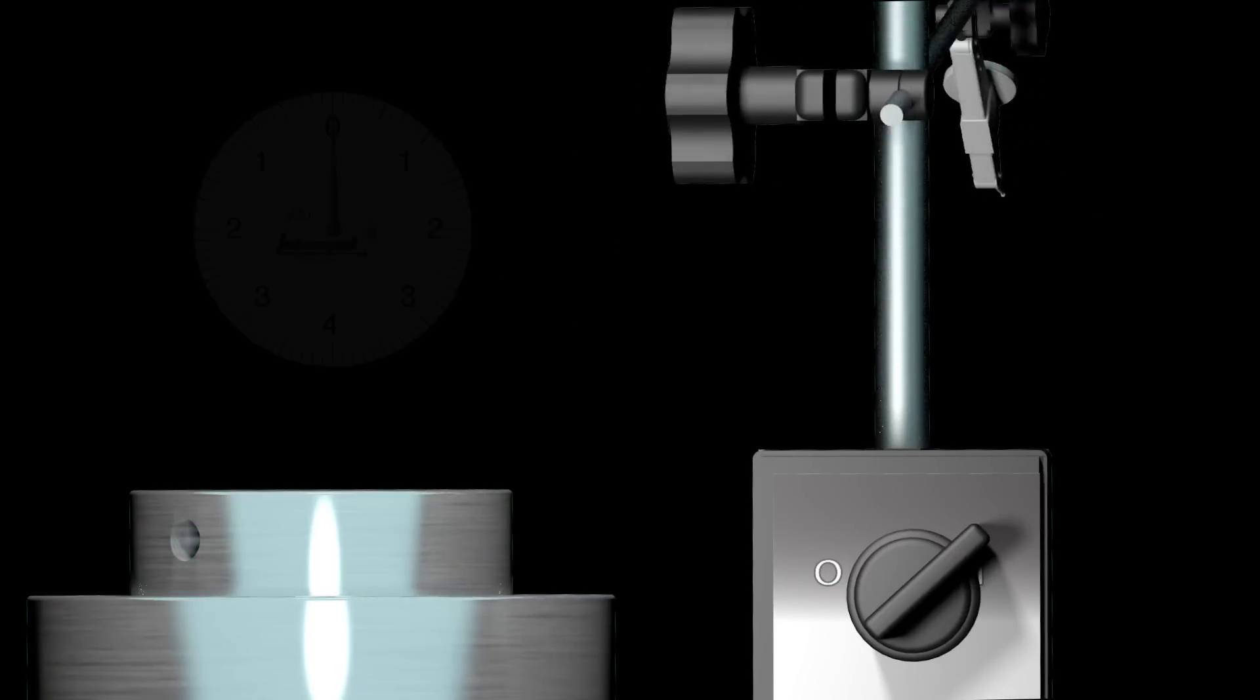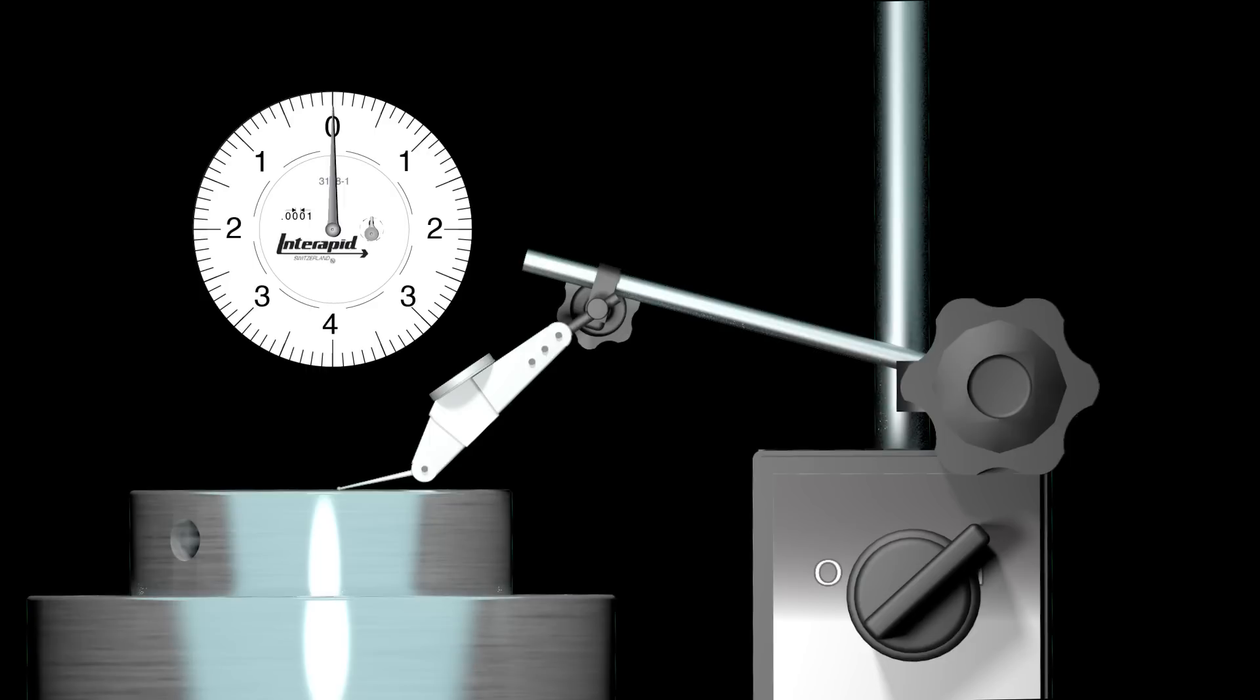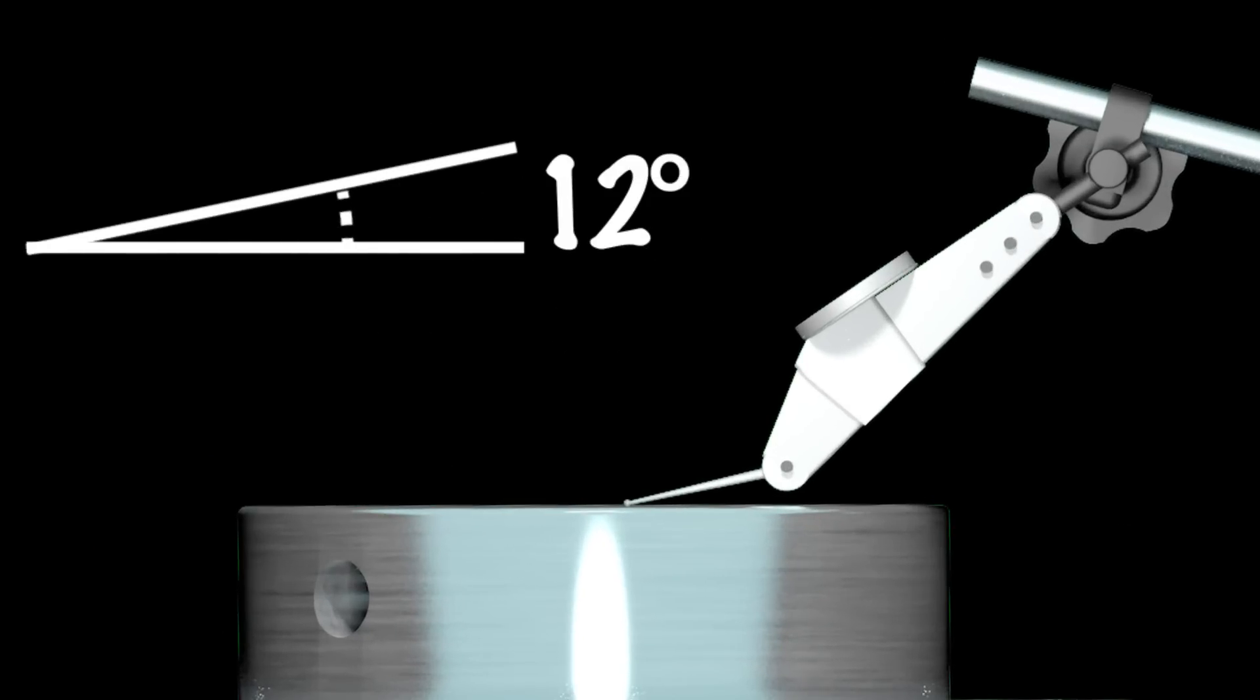So you've got your indicator attached to the mag base. Now if you're using an Interapid indicator like we use here in the Haas factory, you'll need to align the stylus so that it rests at a 12 degree angle to the surface you're indicating. 12 degrees is where these are most accurate.